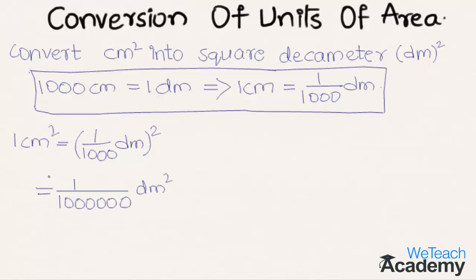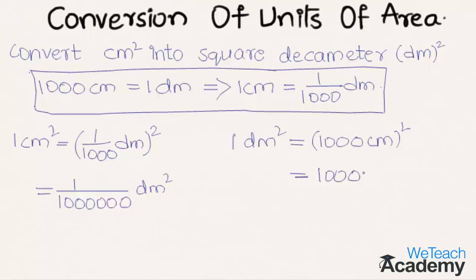Now let us convert one decameter square into centimeter square. In order to convert, let us square this. So we get one decameter square is equal to one thousand centimeters, whole square. That implies we get one million centimeters square. So we can say that one centimeter square is equal to one by one million decameter square, and one decameter square is equal to one million centimeter square.